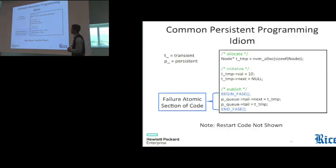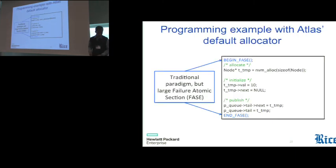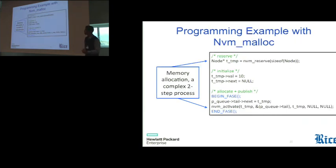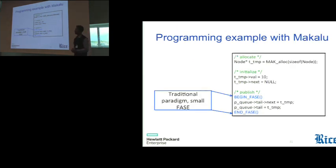Now, here I show an example of, now I'm going to discuss about the programming with the aspect of using Makalu. So I start with a simple persistent program, a common programming paradigm, where some persistent memory is being allocated, initialized, and then finally published, meaning that it's being made reachable from some persistent root. So with one of the existing programming libraries, what you see here is a large failure atomic section, because under this programming library, you cannot separate allocation from publication. With another existing allocator, although the phase is smaller, here, you have to do a two-step allocation process, which is not the familiar programming paradigm. And with Makalu, you get the original paradigm restored.